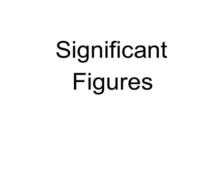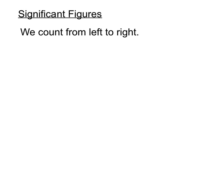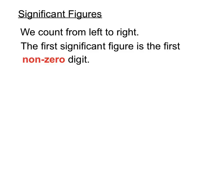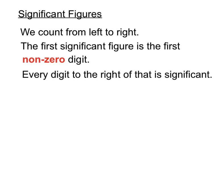Welcome to a video on significant figures. The key ideas are that we count from left to right to figure out how many significant figures a value has. The first significant figure — we start counting when we get to the first non-zero digit. And every other digit to the right of that is significant, or can be, whether it's a zero or not.